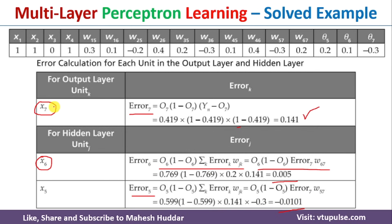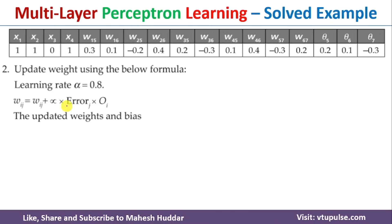We have calculated the error at the output layer neuron and at the hidden layer neurons. Now we need to update the weights. To update the weights, we use the equation: W_ij(new) = W_ij(old) + alpha × error_j × O_i, where alpha is the learning rate (0.8). Once we solve this equation, we get the updated weights.